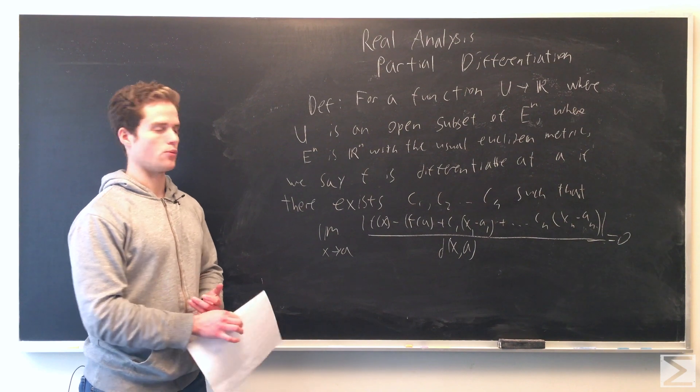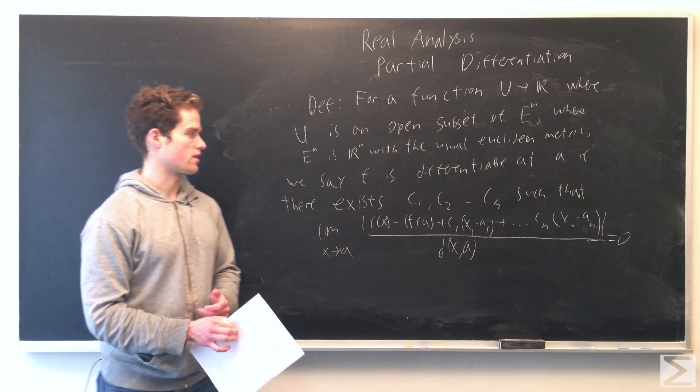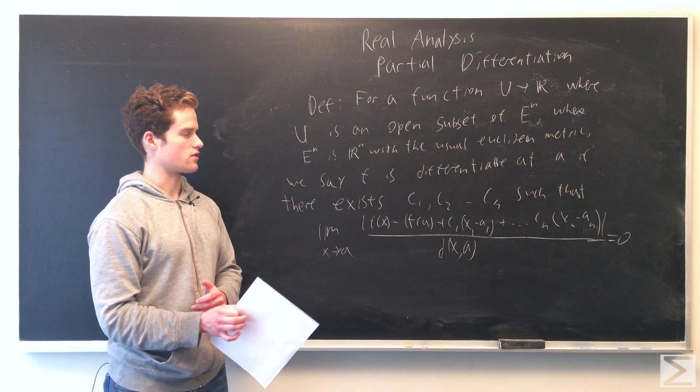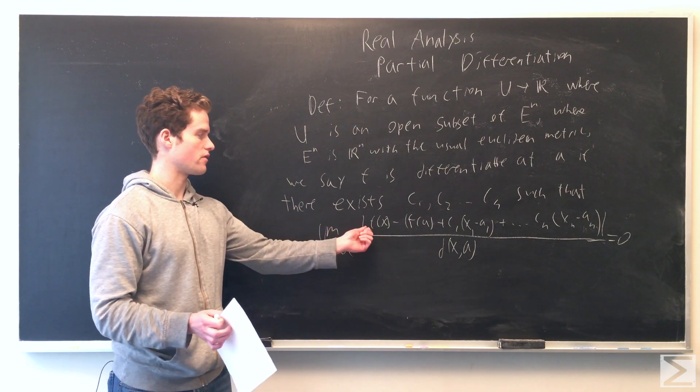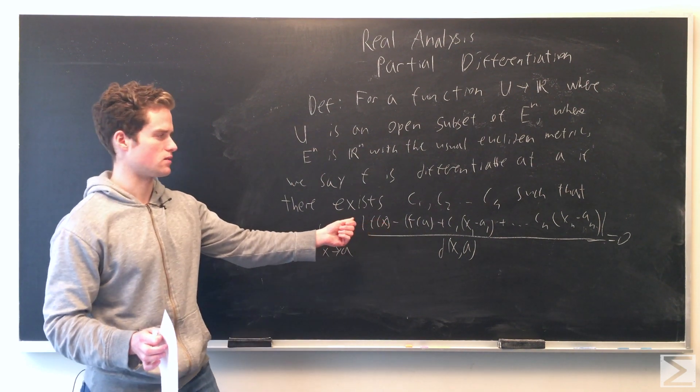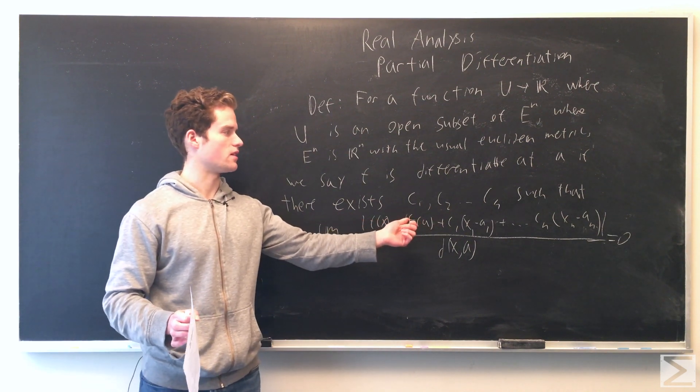We say f is differentiable at point a if we can find constants c_1, c_2, ..., c_n (real numbers) such that |f(x) - f(a) + c_1(x_1 - a_1) + ... + c_n(x_n - a_n)|